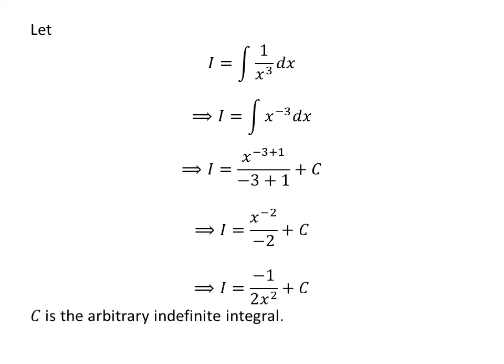Shifting minus sign to the numerator and x to the power minus 2 to the denominator gives us i is equal to minus 1 upon 2 times square of x plus capital C.